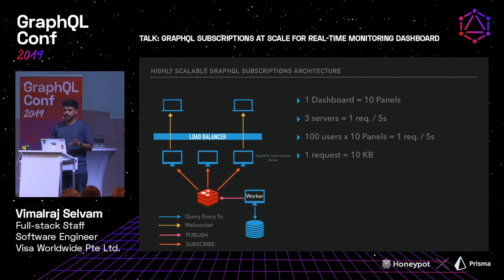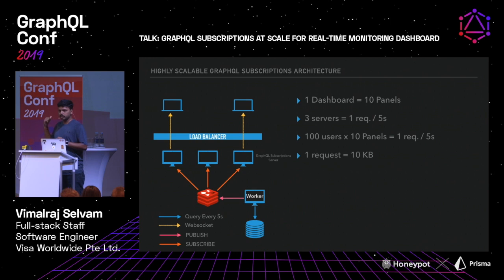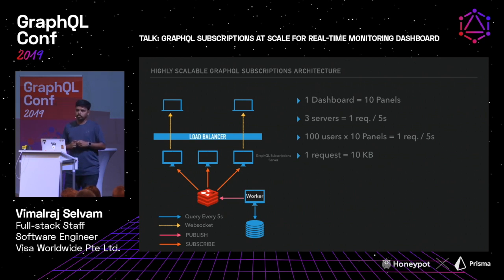We load just 10 KB of data to send to the clients. To recap: we started with almost 10 MB of data, reduced it to 30 KB with subscription servers, and now we've reduced it further to 10 KB. But there is one more problem — the worker, that small thread, is a single point of failure. So we tweaked the design a little to make it highly available, again by leveraging Redis.